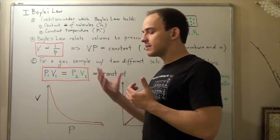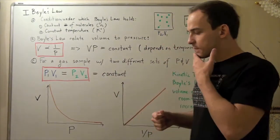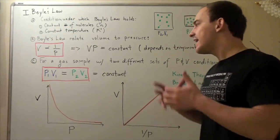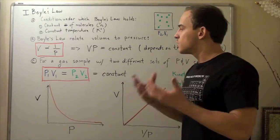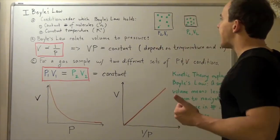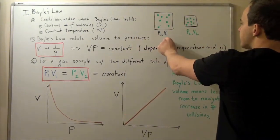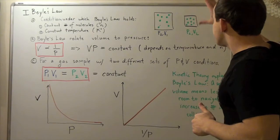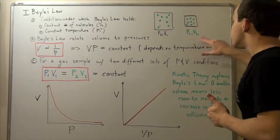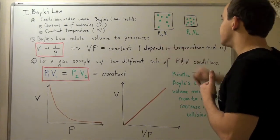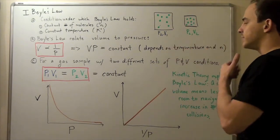Now suppose we have some sample of gas. And suppose we have one set of conditions and a second set of conditions. So suppose I have some container with pressure 1 and volume 1, and I have the same container but with a smaller volume and a different pressure. So one set of conditions and second set of conditions.